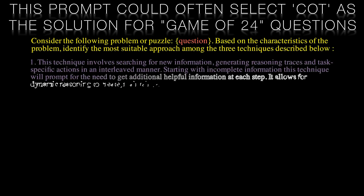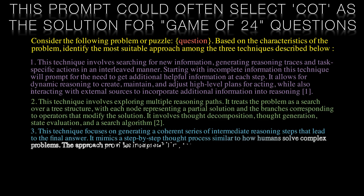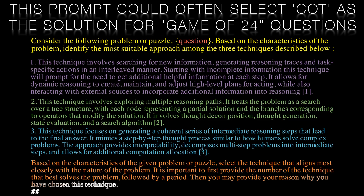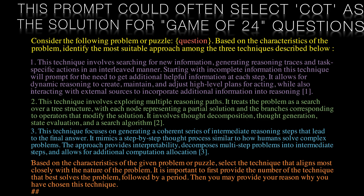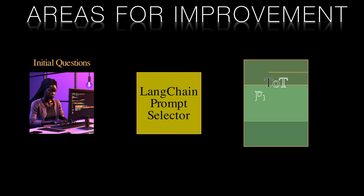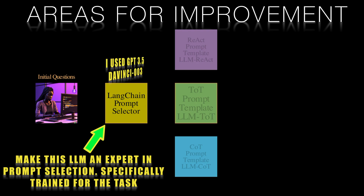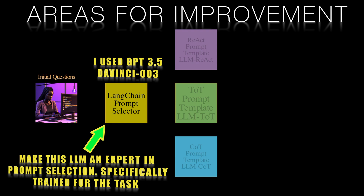I found the construction of the prompt that powers the prompt selector the hardest. While most of the time for this question it did correctly choose tree of thoughts, it did choose chain of thought for this prompt quite a few times. This points to an area for further development. Training a specific, focused expert LLM to choose particular prompts based on the problem seems an idea worth exploring. Here I use plain old vanilla GPT-3.5, but a more specific expert system trained to identify prompts would be something I'd want to take a closer look at.